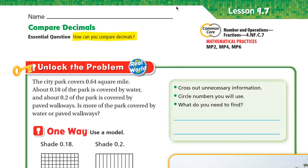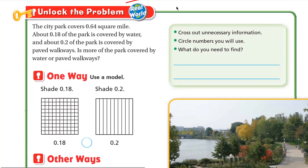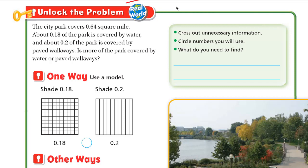In today's lesson we will learn how to compare, for example, 0.18 to 0.2, to know which one is greater. Let's unlock the problem: the city park covers 6,400 square miles, about 0.18 of the park is covered by water, and about 0.2 of the park is covered by paved walkways. Is more of the park covered by water or paved walkways? Cross out unnecessary information — we need to compare the area covered by water to the area covered by paved walkways, so we need to compare 0.18 to 0.2.